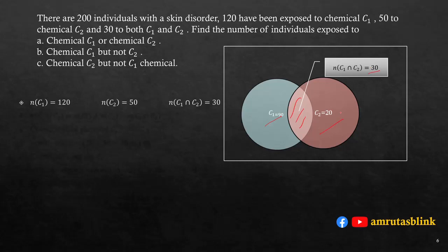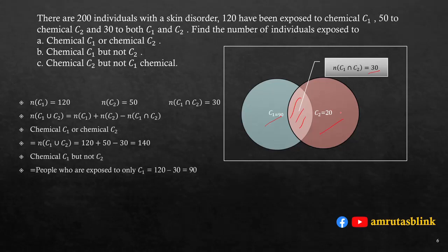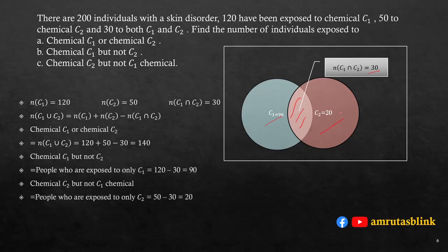Find individuals exposed to C1 or C2: C1∪C2 = 120 + 50 - 30 = 140 individuals. Exposed to C1 but not C2: 120 - 30 = 90. Exposed to C2 but not C1: 50 - 30 = 20. Visualizing with a Venn diagram makes these calculations straightforward.